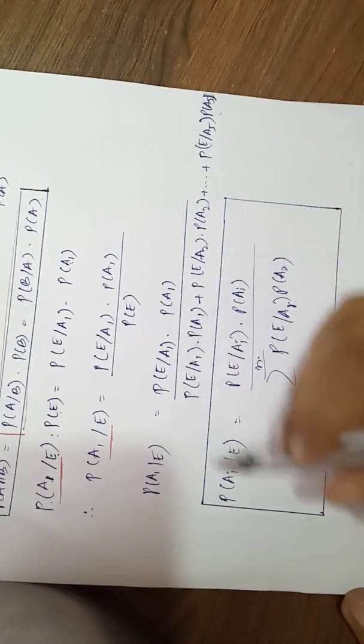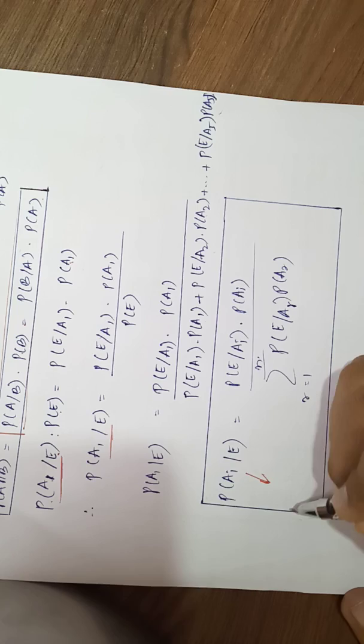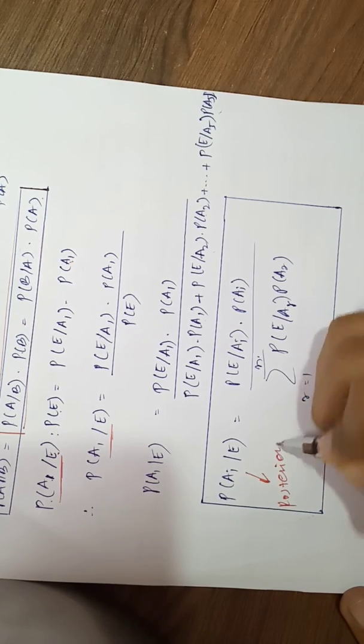And this is the final formula of Bayesian probability. Left hand side shows the posterior probability.